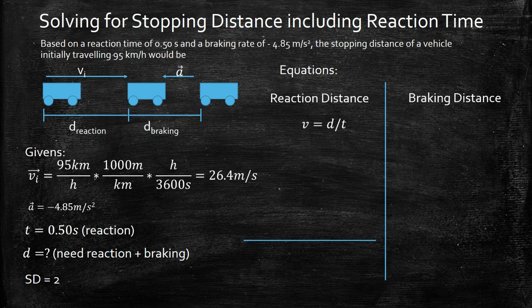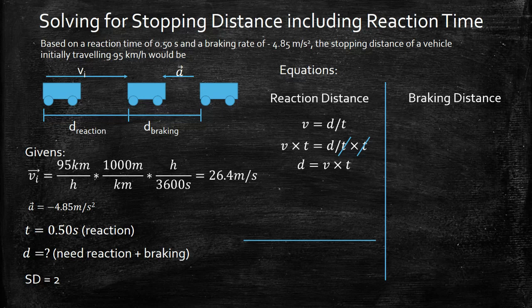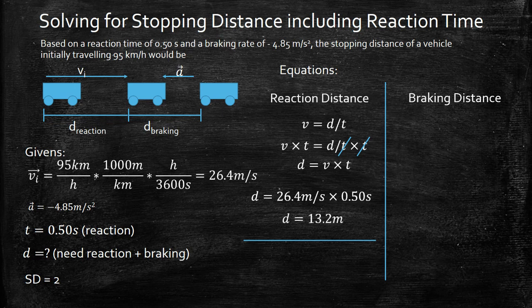First dealing with the reaction distance. This is the easy one. We just need to rearrange that equation to solve for distance. We can do that by multiplying both sides by time and we end up with distance equals velocity times time. So we go ahead and plug in our numbers and we get a distance of 13.2 meters.